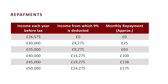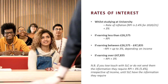The more you're earning, the more you'll be paying back each month. If you're earning £50,000, you'll be repaying approximately £175 a month. Interest is added to the loan: while studying at university, it's added at the rate of inflation plus 3%, which works out at around 5.4%. Once you've graduated, if you're earning less than £26,575 a year, interest is added at the rate of inflation only. If you're earning between £26,575 and £47,835 a year, it's added at inflation plus up to 3% on a sliding scale. If you're earning above £47,835 a year, it's at inflation plus 3%.